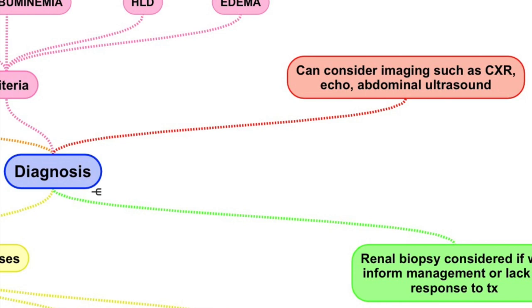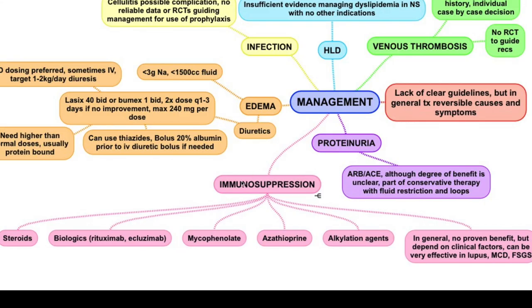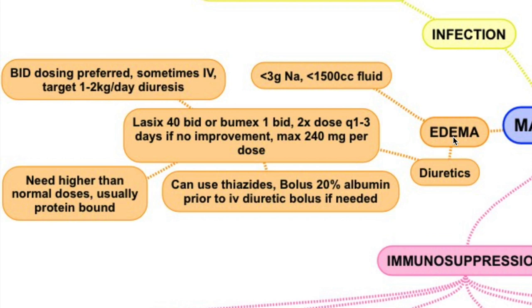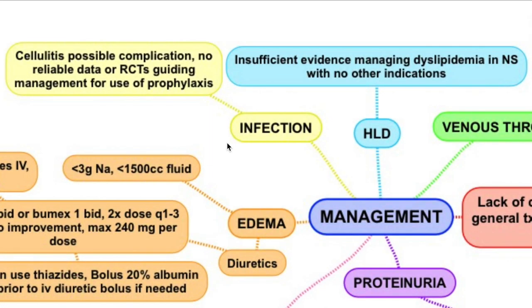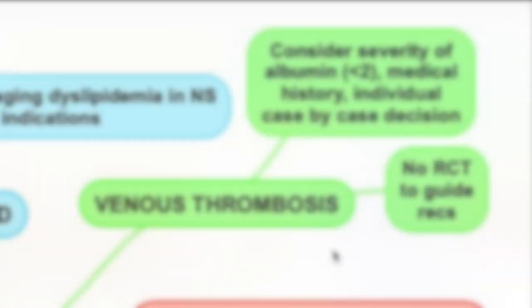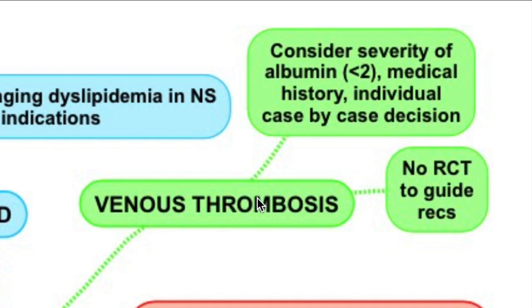If you have a low protein or albumin state you may have swelling in other parts of the body such as the lungs, heart, and abdomen, so consider chest x-rays, echoes, and abdominal ultrasound. For general management: use ARBs or ACEs for proteinuria. For immunosuppression, steroids, biologics, or other medications may be used. For swelling, Lasix or Bumex are commonly used and doses can be titrated quite high. For increased infection risk there are no clear prophylactic guidelines. Similarly, no guidelines exist for treating elevated cholesterol without other indications. For venous thrombosis risk, assess albumin levels and make decisions case by case.